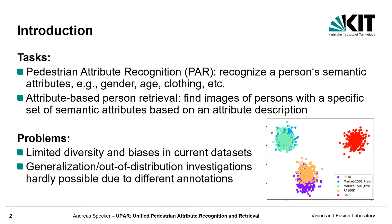One big problem in these research fields is that no appropriate and realistic datasets are available. The datasets are strongly biased with respect to attribute distributions as well as image data distributions, as shown in the figure. Besides, no overarching set of attributes is annotated, which means that generalization experiments are not possible at the moment.